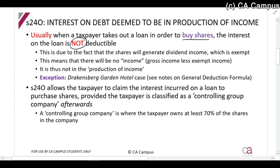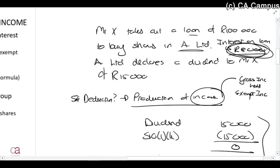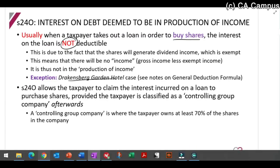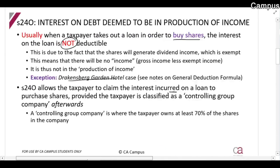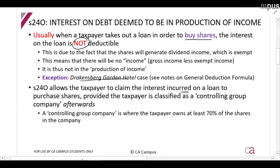There was a court case called the Drakensberg Garden Hotel case, which said you can claim the interest if you can prove that the reason the person purchased these shares is for some other reason to produce income — for example, if you are a company that sells bread and you purchase the company that produces the flour. But usually there is no deduction. Section 24O, however, allows you to claim that interest.